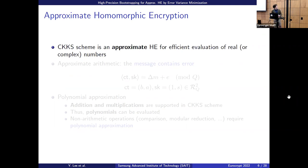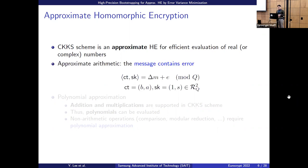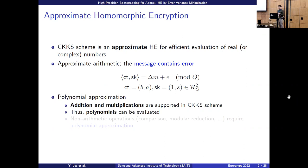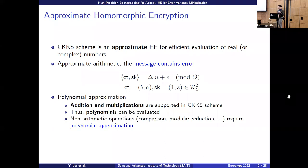I will review the approximate homomorphic encryption scheme CKKS, proposed by Cheon, Kim, Kim, and Song. CKKS is an approximate homomorphic encryption scheme efficient for real or complex numbers. Its interesting characteristic is that the message contains error — when we decrypt the ciphertext we get m plus e — and we do not extract the error, unlike BGV or BFV. Addition and multiplication are directly supported for CKKS, so we can perform any polynomial operation.